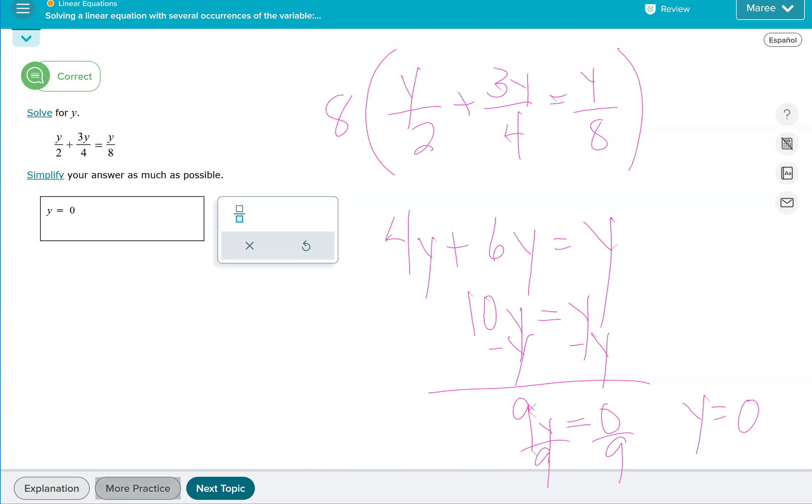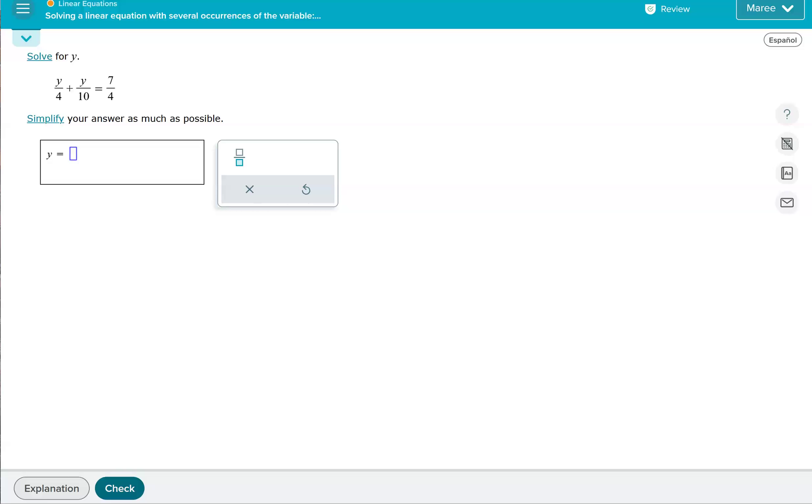We'll do one more just for kicks and giggles and to have another chance to do some practice. We have 4 and 10. We're looking for the least common multiple of 4 and 10 to multiply the entire equation by. 20 is the smallest number that they both can go into. If you picked 40, that's okay, just we'll have a little bit of simplifying to do at the end.